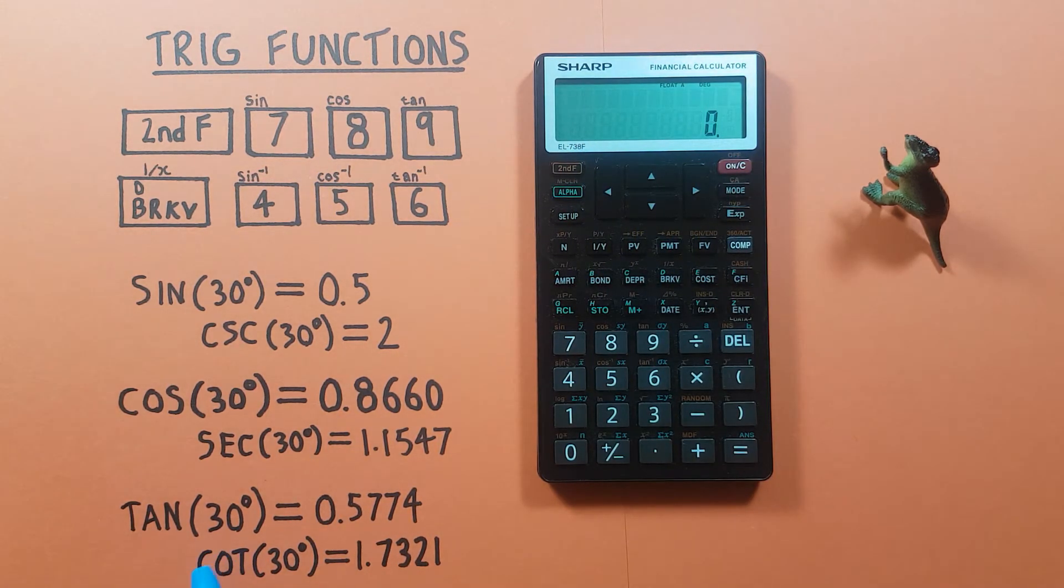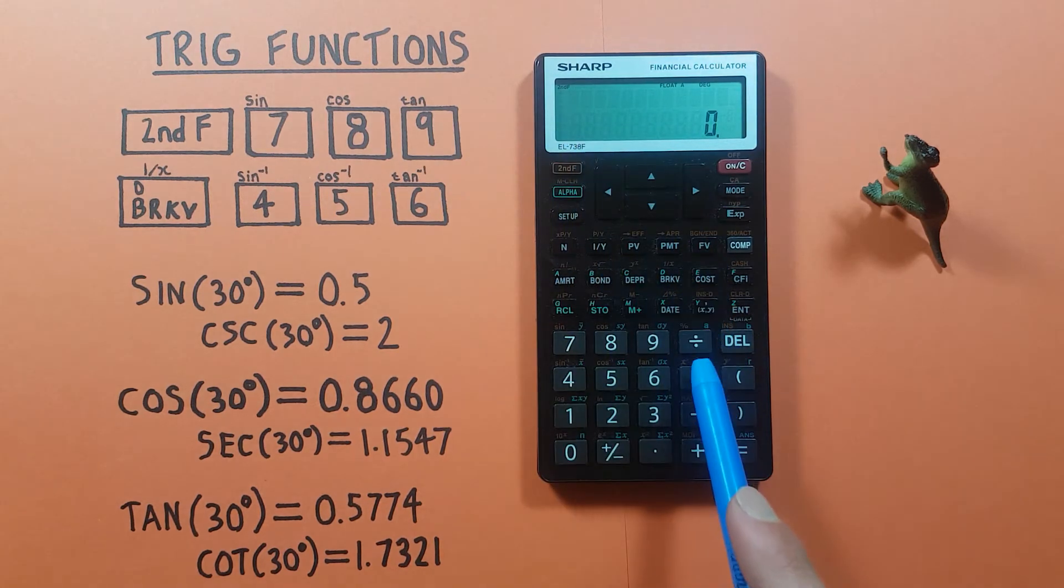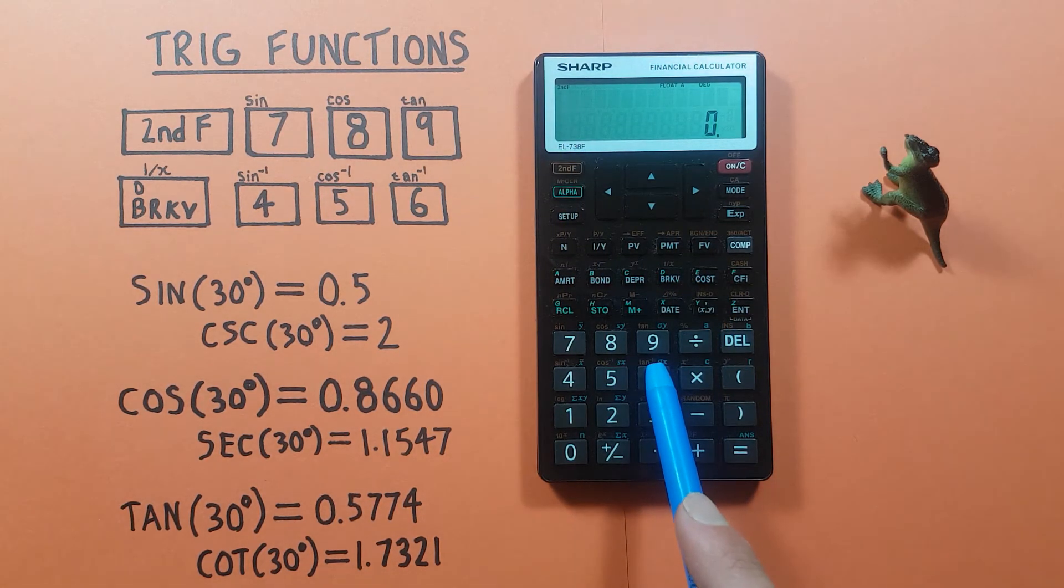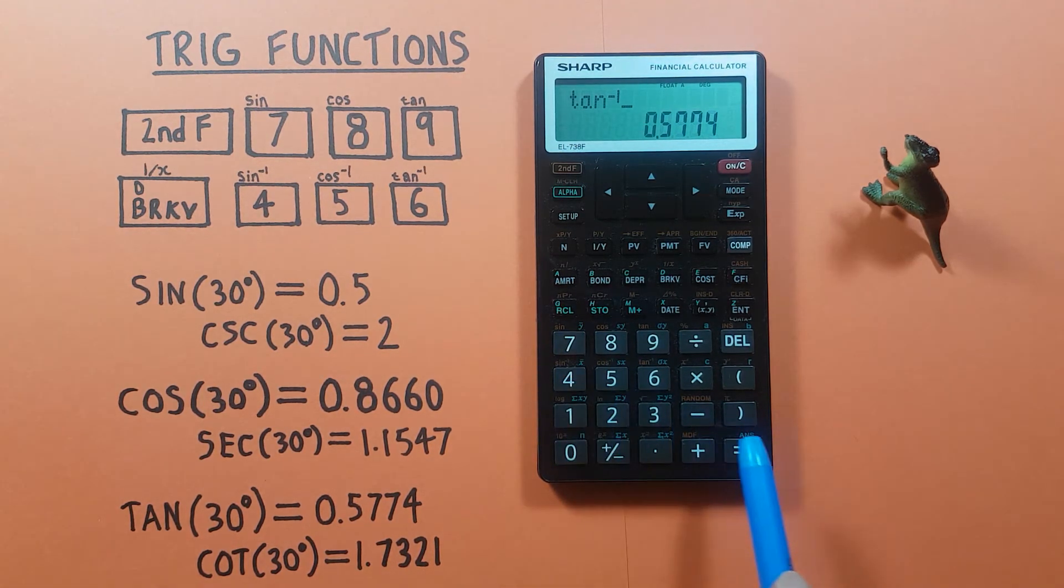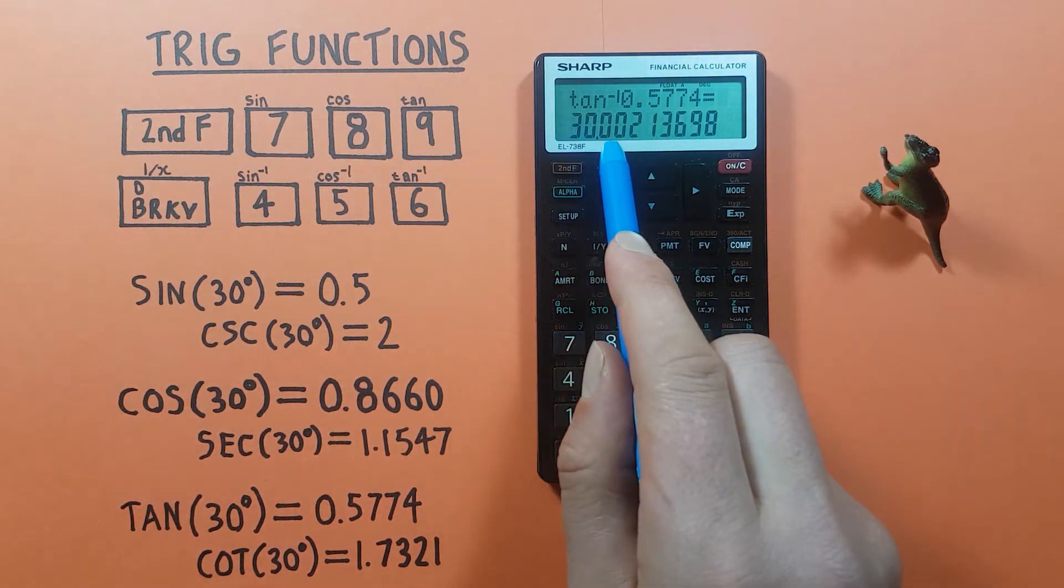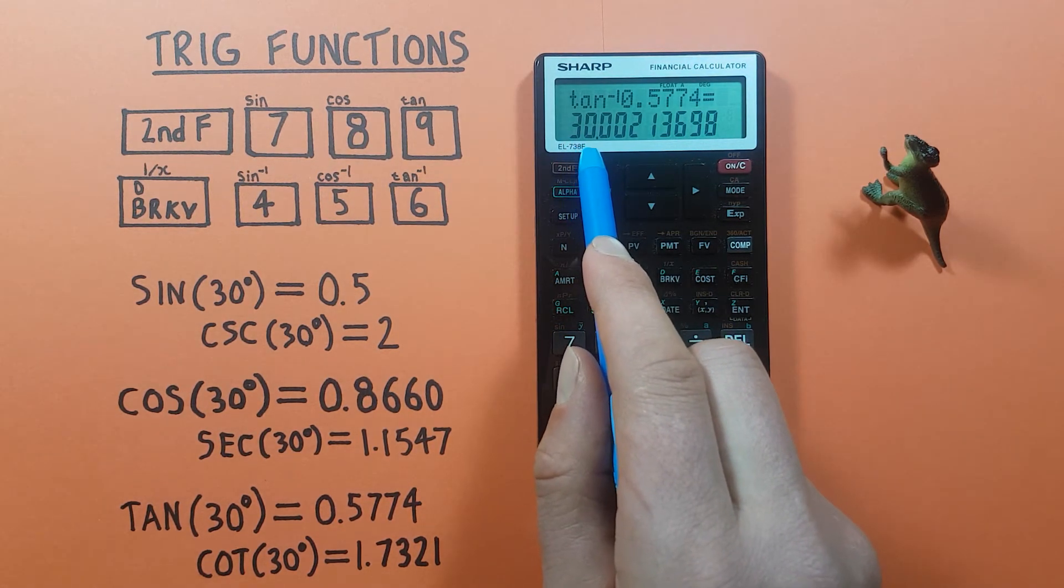Arc tan, again second, six, in this case that's our tan, and then 0.5774, equals. Again gives us something that would round to 30 degrees.